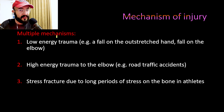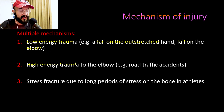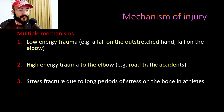In olecranon process fractures, we have multiple mechanisms of injury. These include low energy trauma such as a fall on the outstretched hand or a fall on the elbow. A second mechanism is high energy trauma to the elbow, like in road traffic accidents. A third mechanism is a stress fracture due to long periods of stress on the bone in athletes.